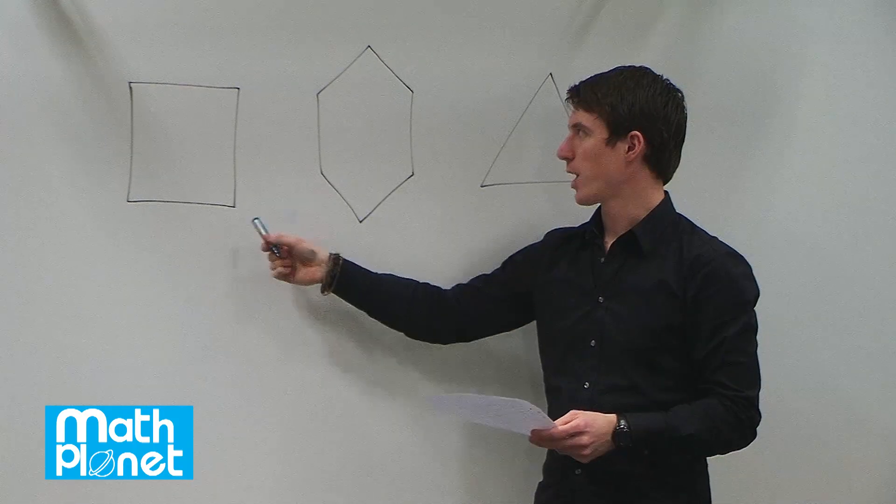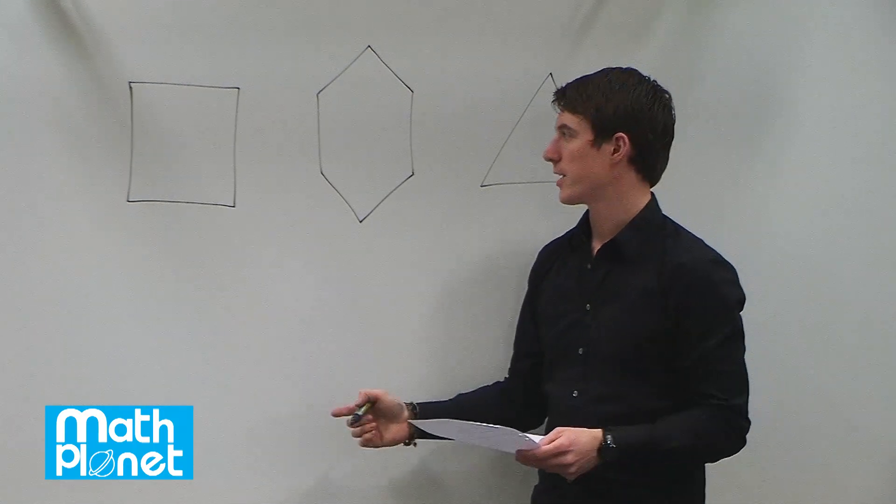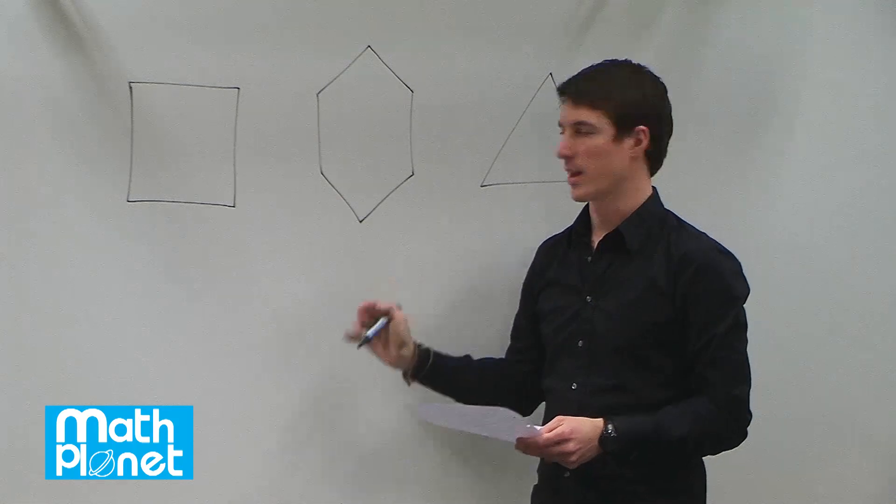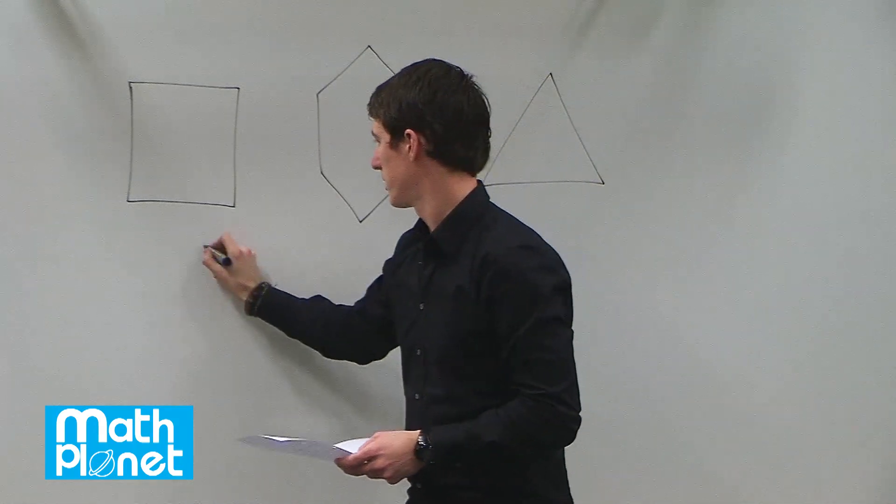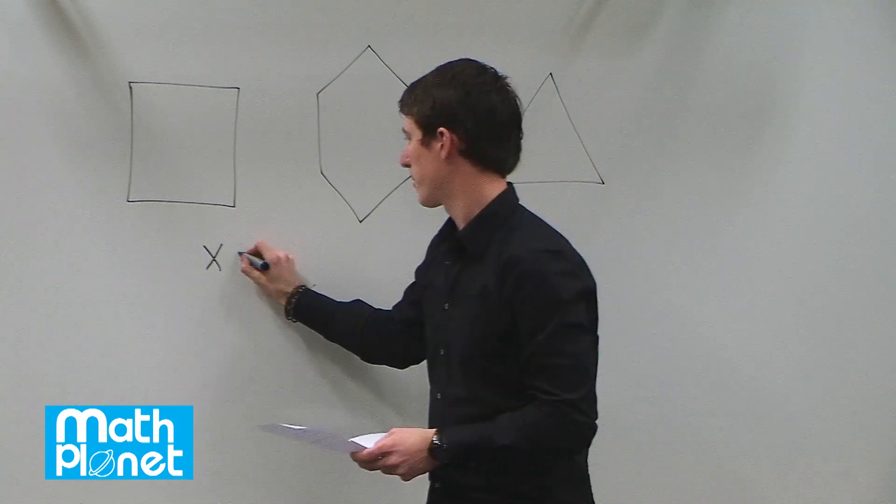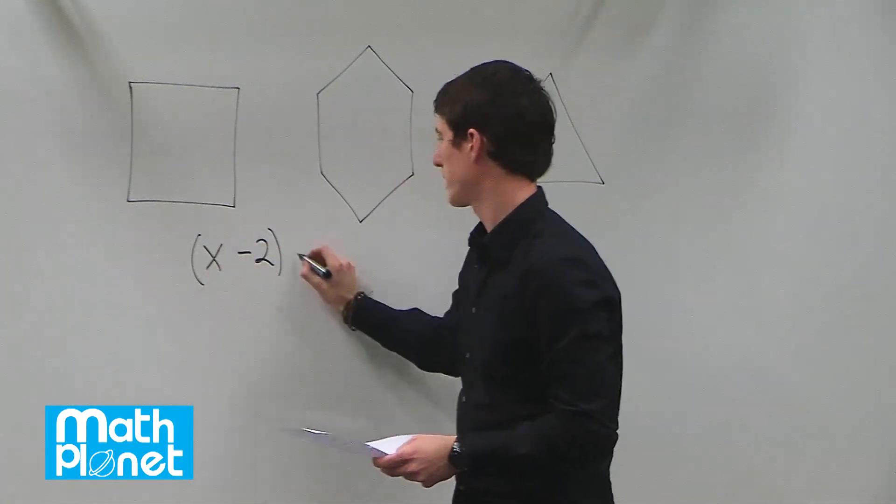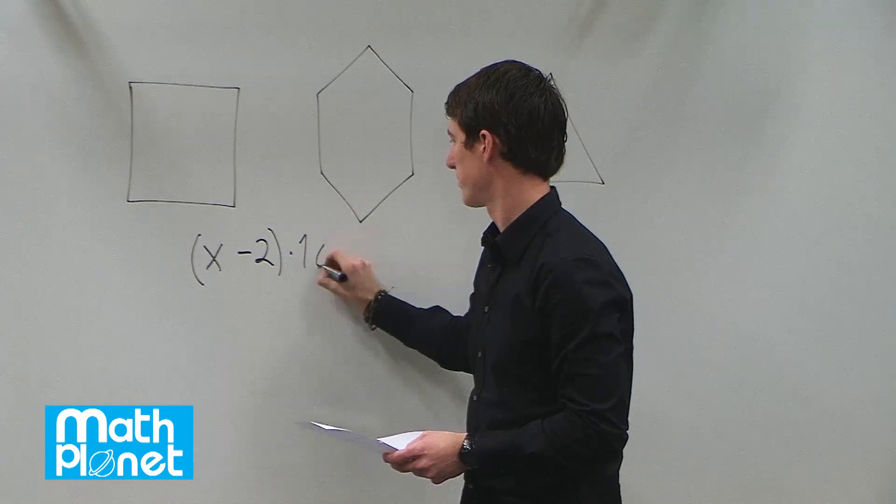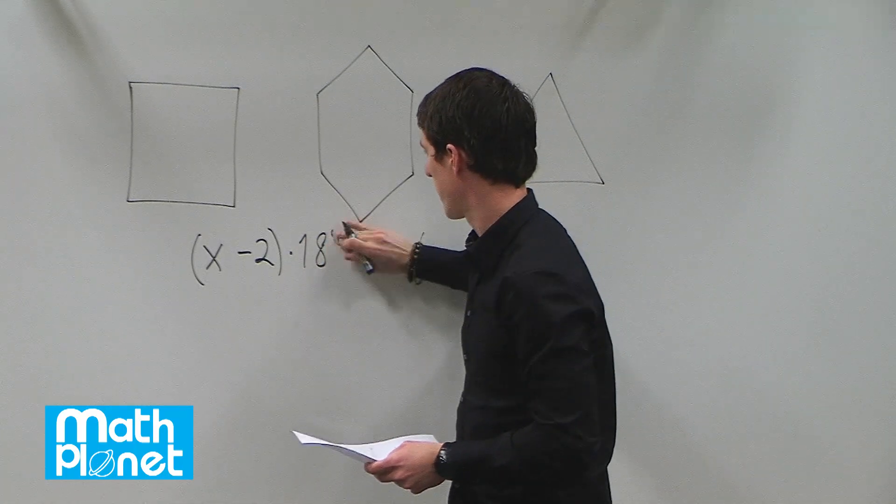So to do that we need to look at the basic formula to determine what that is or we can look at an individual case. The formula is x being the number of angles or the number of sides minus two quantity times 180 degrees.